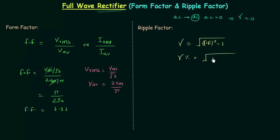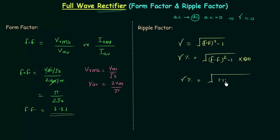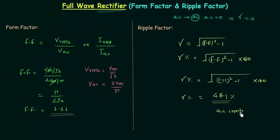the square root of 1.11 squared minus 1, multiplied by 100. When you solve this, you will have 48.1 percent as the ripple factor. So in the rectified output, we have 48.1 percent of AC component.